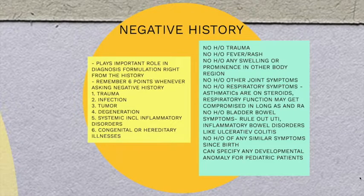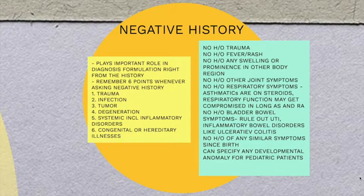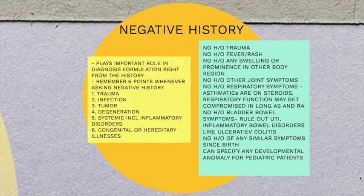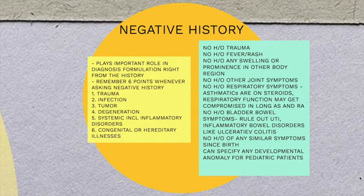There is no history of trauma, no history of fever or rash, no history of any swelling or prominence in other body regions, no history of other joint symptoms, and no respiratory complaints. Respiratory complaints are relevant because asthmatics on steroids can have joint problems as a complication of steroids, and those with difficulty in breathing can have rheumatoid arthritis or ankylosing spondylitis because chest expansion is limited in these patients at a later stage. No history of bladder-bowel symptoms — here you rule out UTI and inflammatory bowel disorders like ulcerative colitis, which are autoimmune disorders that can have joint symptoms as well. No history of any similar complaints since birth; you can also specify any developmental anomaly for pediatric patients.